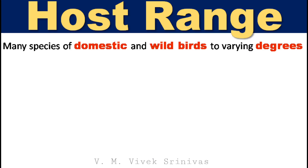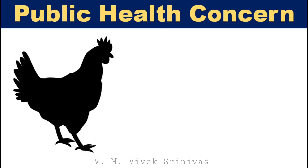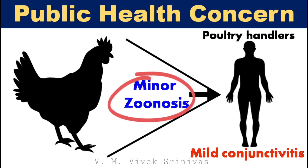Host Range. Apart from chickens, this virus also infects and has been reported in many species of domestic and wild birds of all age groups, such as turkeys, pheasants, partridges, quail, guinea fowl, passerine birds, parrots, cockatiels, waterfowl, cormorants, ostriches, pigeons, vultures, sea eagles, falcons, ospreys, gulls, owls, pelicans, crows, ravens, and penguins. Susceptibility and severity varies with the species. This virus can be transmitted from infected poultry to humans and causes mild conjunctivitis in poultry handlers, so this infection has public health concern with minor zoonotic potential.